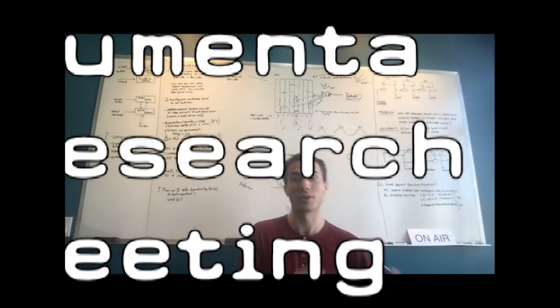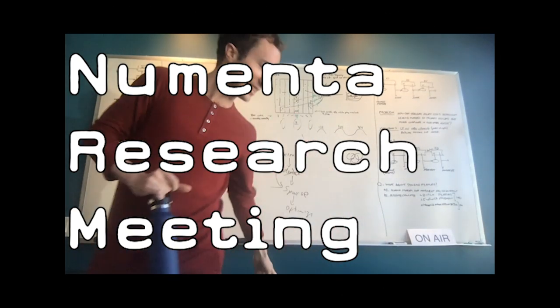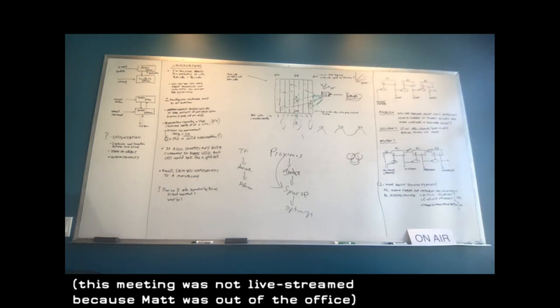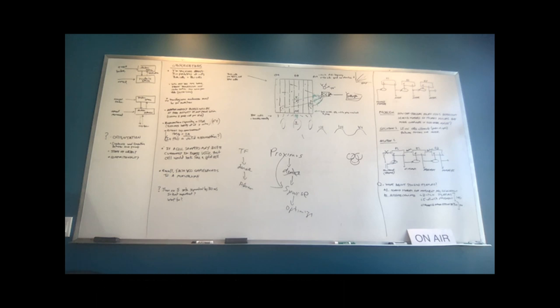We're recording now. The first paper I'm going to discuss is this grid cell conceptual space paper by Kriegskorte and Storrs. Florian, I think you told me about this paper and you wanted to talk about it, and then I read it yesterday.